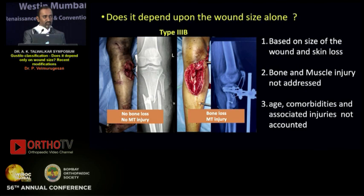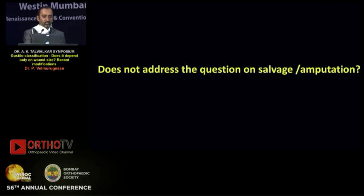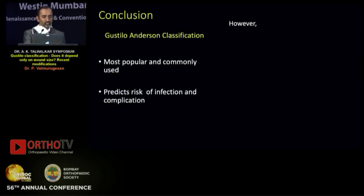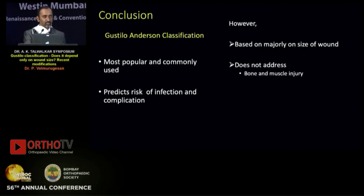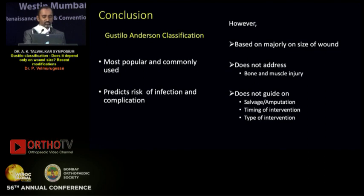This classification is mainly based on wound size and presence of skin loss. It does not consider other injury factors such as bone and muscle injury that affect functional outcome, does not address age, comorbidities, or associated injuries, and does not address the question of salvage versus amputation. In conclusion, Gustilo-Anderson classification is the most popular and widely used, and predicts the risk of infection and complication. However, it does not address other components of injury, does not guide treatment decisions such as salvage or amputation, timing, or type of intervention, and has poor inter-observer reliability.